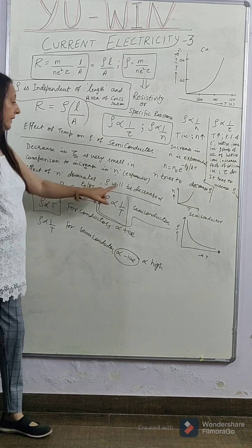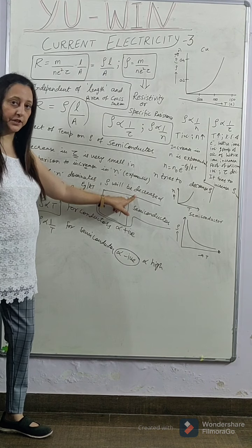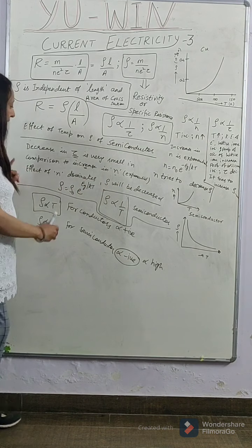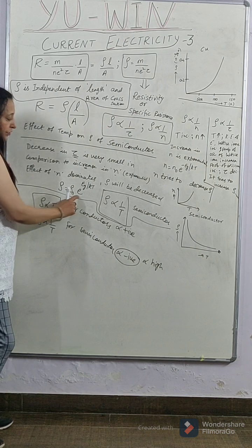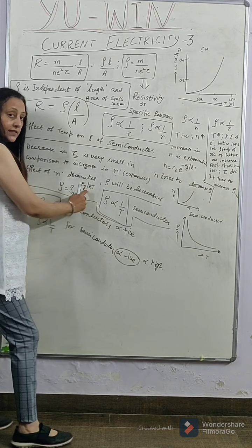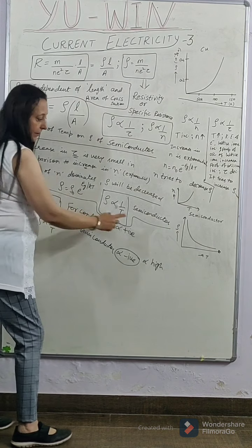And the resistivity will be decreased. It means as temperature increases, conductivity increases, resistivity decreases. According to the expression, rho is equal to rho naught e raise to the power EG by KT, where K is Boltzmann constant, T is the temperature, EG is the energy gap.